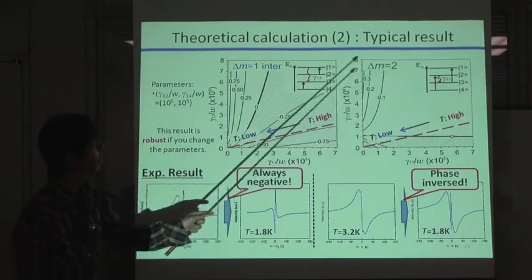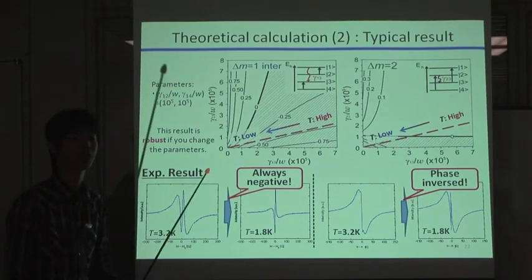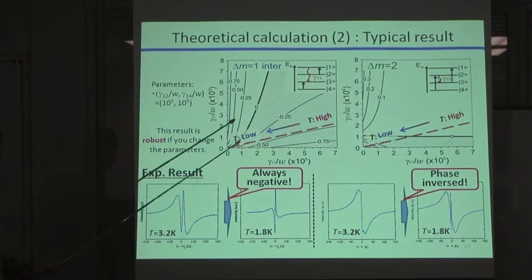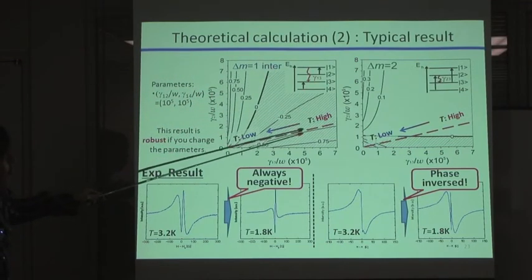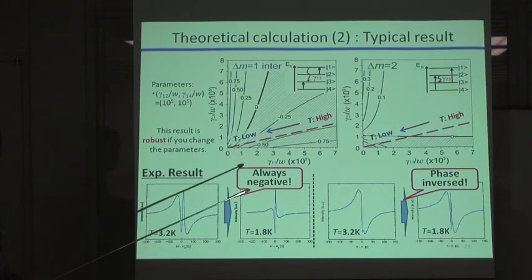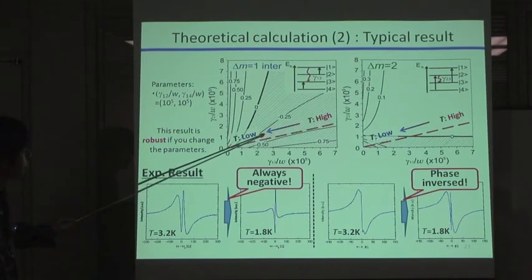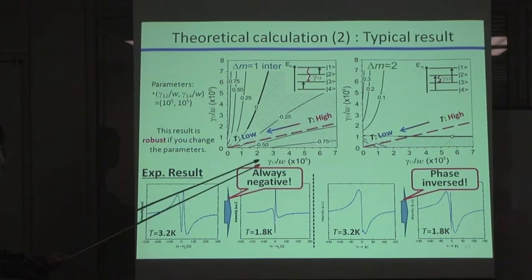So these two parameters play an important role in this model. And the contour plot is a normalized value of I difference. So this shaded region means a negative region. And this red diagonal line means a relationship between gamma 1,3 and gamma 2,3 estimated by the experimental data.